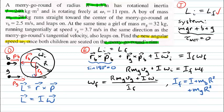The only remaining quantity we need is the initial angular velocity. We know it as 11 revolutions per minute, but we need to convert units — multiplying by 2π to convert revolutions to radians and dividing by 60 to convert per minute to per second — giving us 1.15 radians per second.